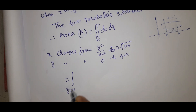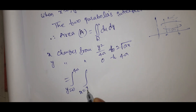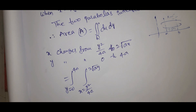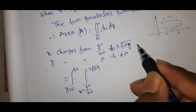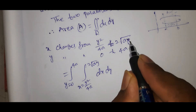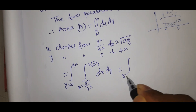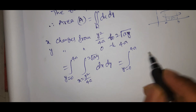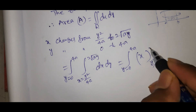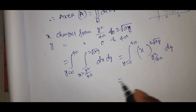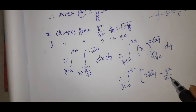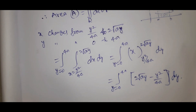That equals the double integral with y from 0 to 4a, and x from y²/4a to 2√(ay) of dx dy. Integrating with respect to x, we get the integral from y=0 to 4a of [2√(ay) − y²/4a] dy.